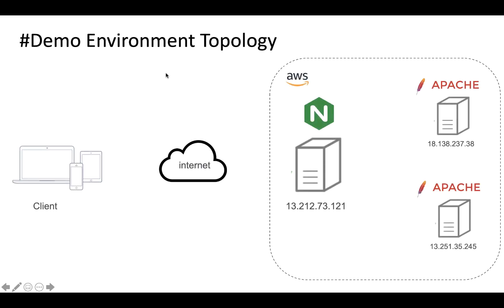Let's jump into the demo. This is the demo environment topology where I've provisioned a couple of EC2 instances in AWS. I already have two backend servers with Apache installed on both of them, and in front there is a reverse proxy server where I've already installed nginx.